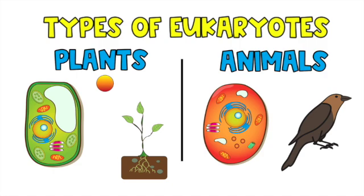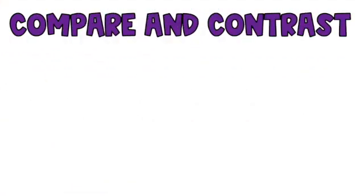With plant cells we have more of a rectangular, box-like shape and a cell wall. With animal cells we have more of a rounded cell and no cell wall. But both share a lot in common: they make up multicellular organisms, both include a nucleus — the brain or central command post of the cell — and they all have membrane-bound organelles.